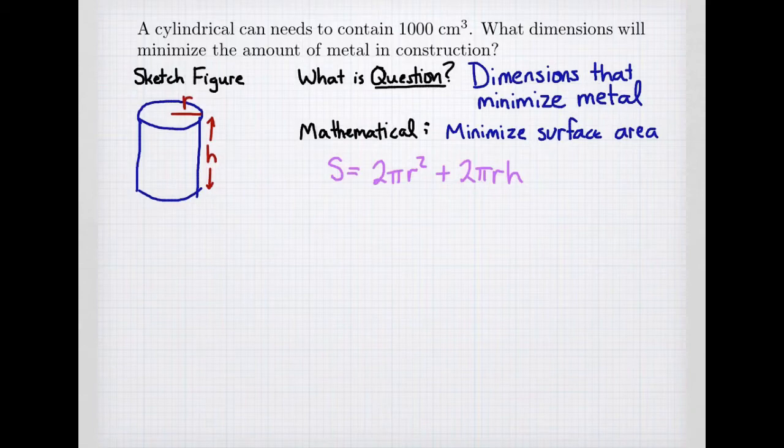Mathematically, the metal corresponds to the surface area of my cylinder. The formula for surface area of a cylinder, which we represent with the variable s for surface area, consists of two circles.